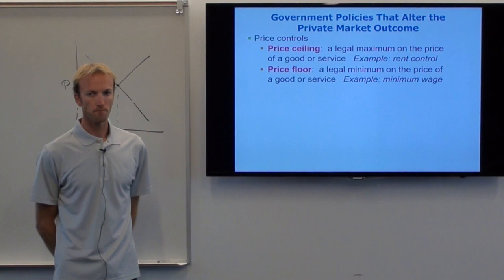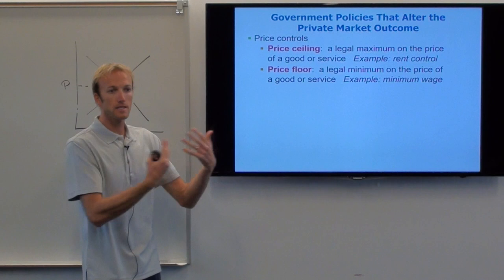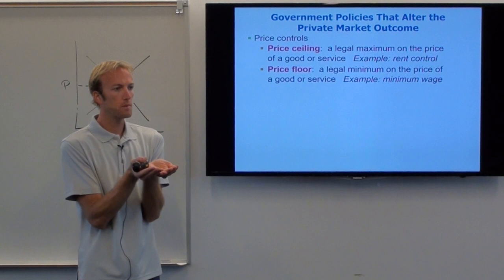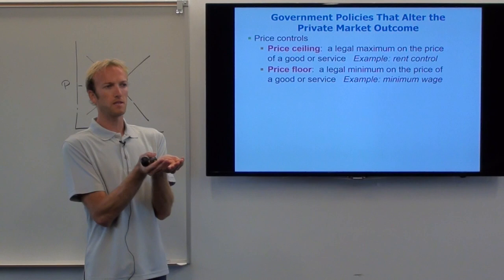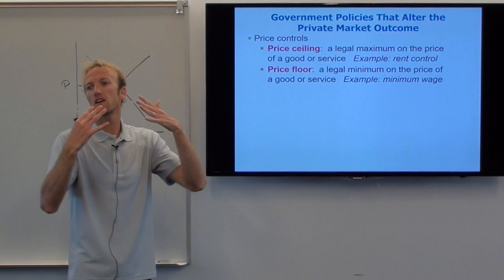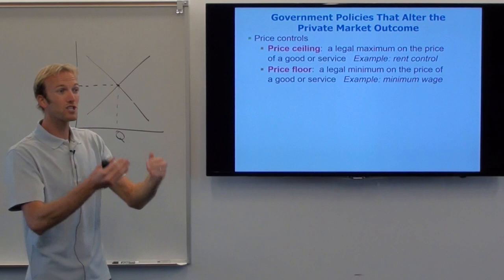An example of this is the minimum wage. The wage that we pay to somebody is the price of the labor we're purchasing. We're buying somebody's labor as the factory, so we're paying them a price, and the government says that price has to be above a certain amount. The minimum wage in California right now is around nine dollars. A lot of places are talking about a $10 or $12 federal minimum wage, and in California some places are talking about a $15 minimum wage. So we'll examine what happens when the government sets a minimum wage, which is a price floor.